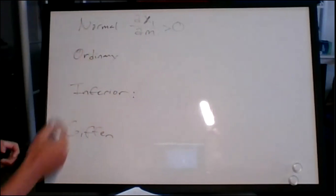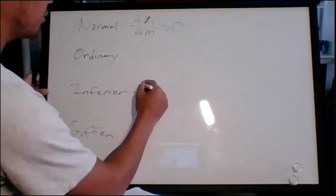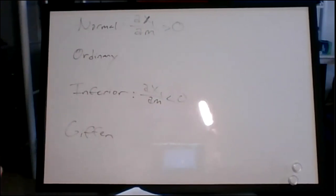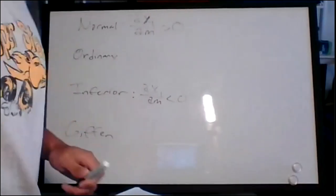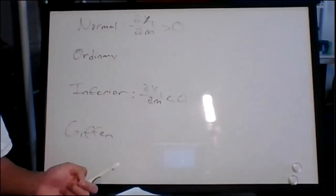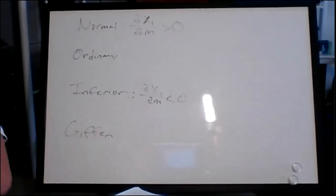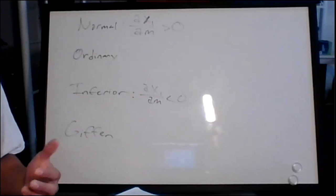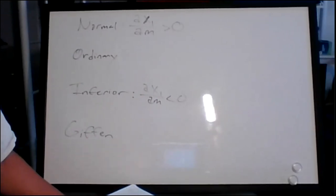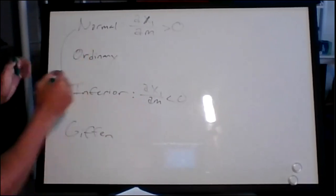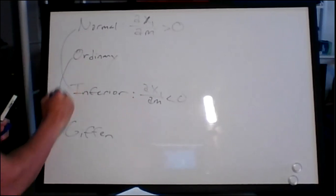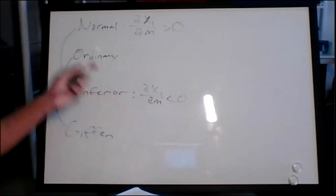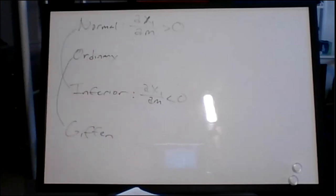An inferior good is the opposite of a normal good: as my income increases, I'm actually going to be consuming less and less of that good. Something typically inferior might be top ramen — as you gain more money, maybe picking up a full-time job, you consume less of these instant meals and start buying more expensive ingredients. I like to group normal and inferior together because they're both dependent on income increases or decreases.